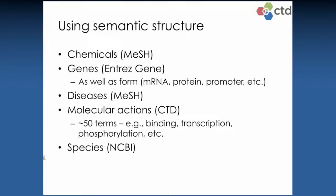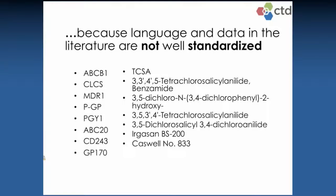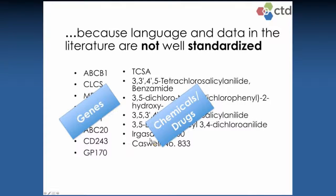Why do we use these semantic standards? Language and data in the literature are not very well standardized. You can see in this first column all these symbols describing the same exact gene — you can find all these references within the literature but would not necessarily know they are the same gene. Similarly, all of these terms in the right column describe the same chemical. Using standards that account for all of these synonyms helps both from a curation perspective and a user perspective, so that everyone using any synonym gets the same results.